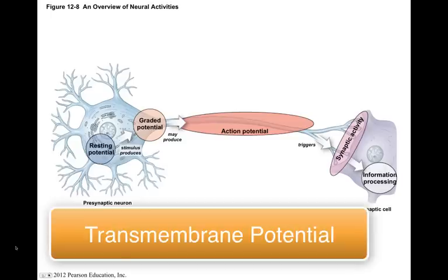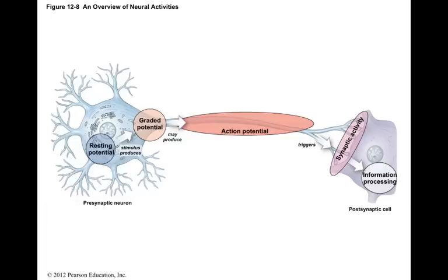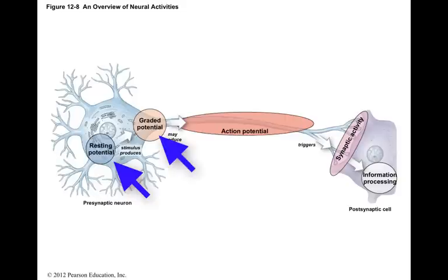This segment is on the transmembrane potential. The transmembrane potential is the electrical difference between the ion concentrations inside of the cell and outside of the cell. It is called a potential because it has the ability or potential to change. The transmembrane potential can either be a resting potential, a graded potential, or an action potential.